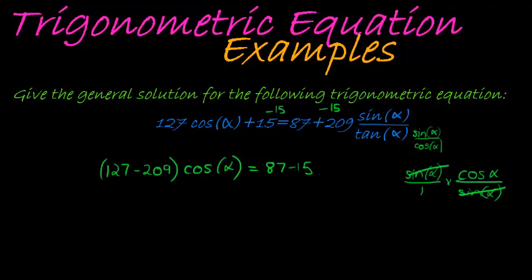That means my trig ratio equal to constant is that cos alpha is equal to, what do I have? 127 minus 209 gives me negative 82. On the left-hand side, I have 87 minus 15, which gives me 72.